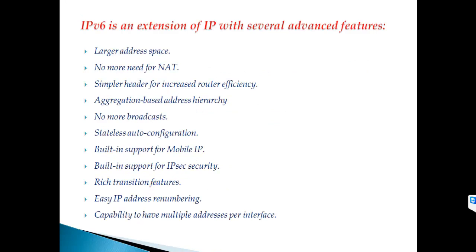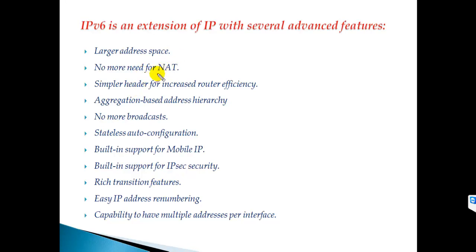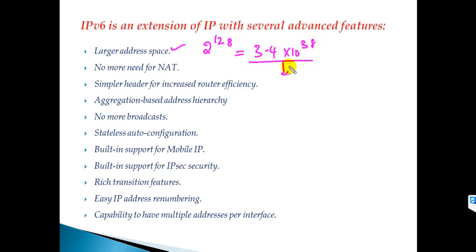Before moving into IPv6 addressing, let me give some advantages and features of IPv6 compared with IPv4. First, IPv6 provides a very large address space — 2 to the power of 128 addresses, somewhere around 3.4 × 10^38 addresses. This means almost every human can get a single IPv6 address. Even if the internet grows more than double every year, for the next 50 years we can survive without any shortage of IP addresses.